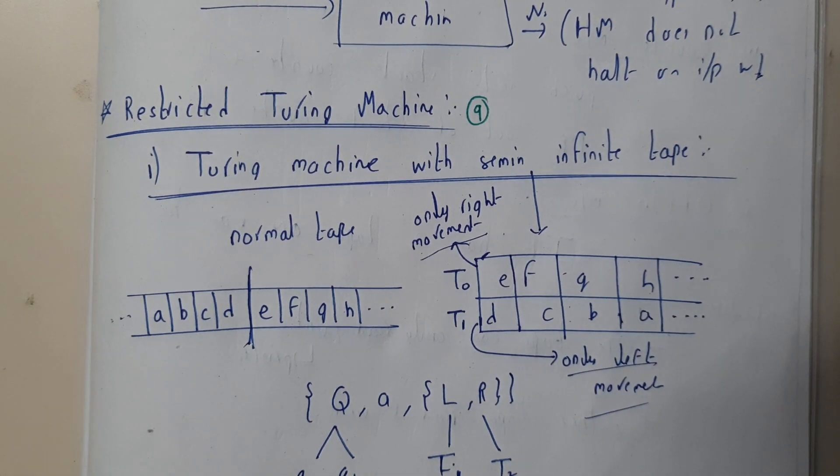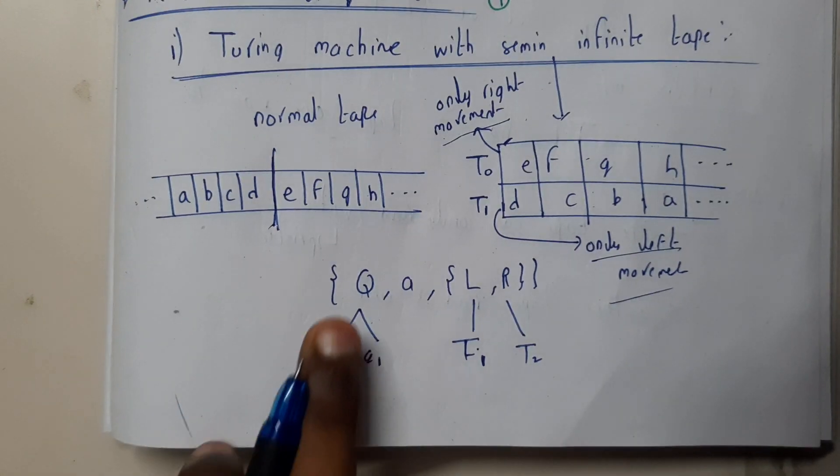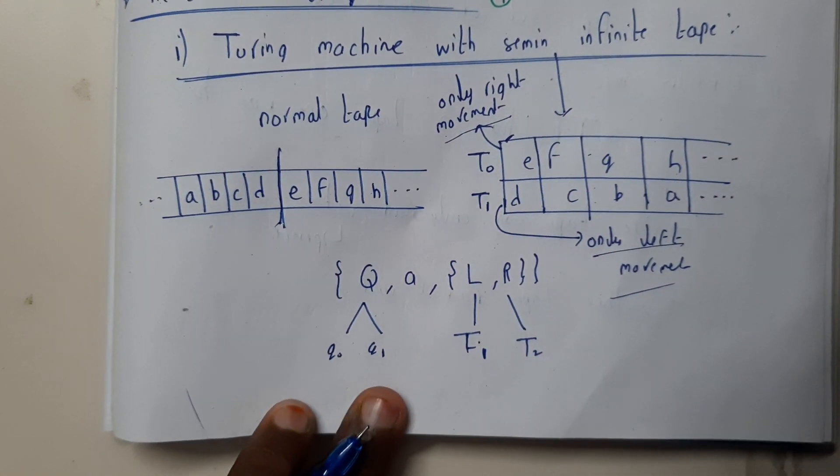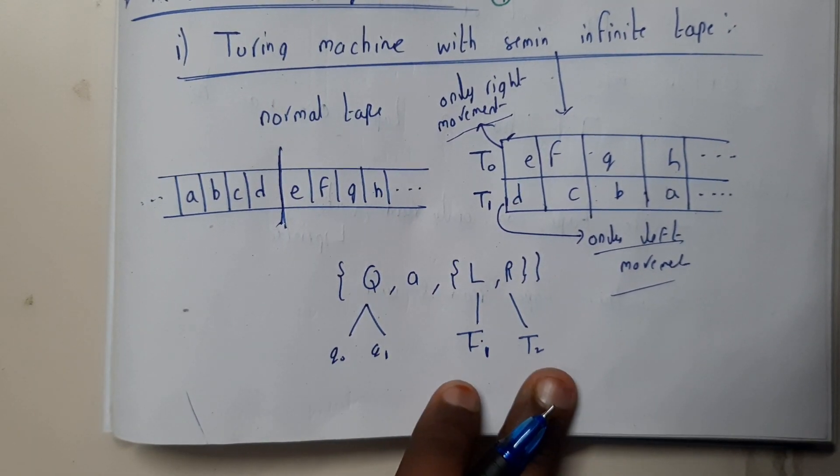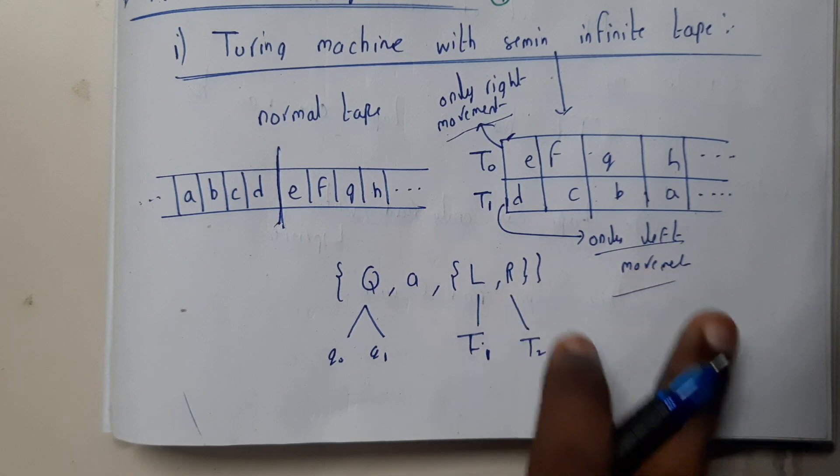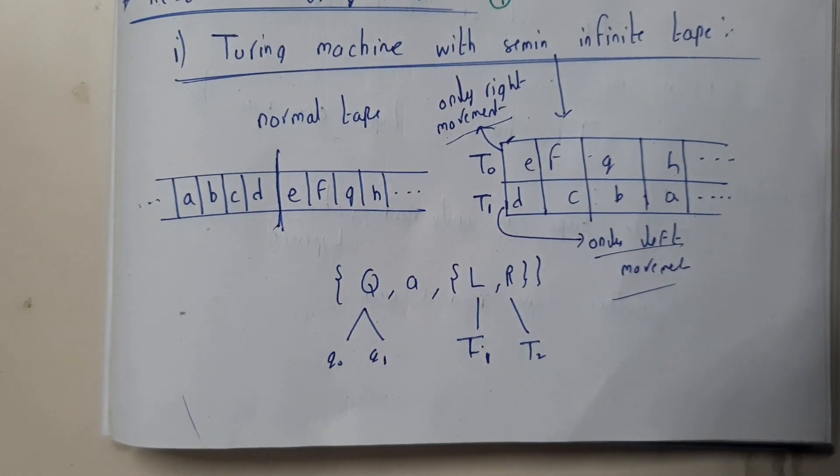Here Q will be denoting with Q states - two states - and the left-right will be denoting with two states. This is for T1, this is for T2, tape 1 and tape 2.